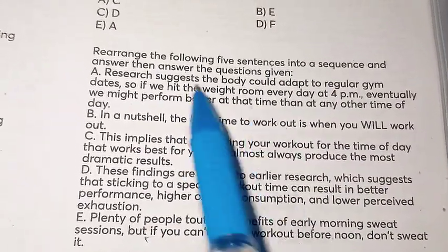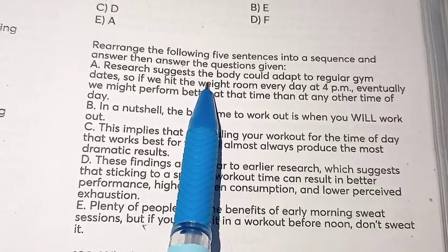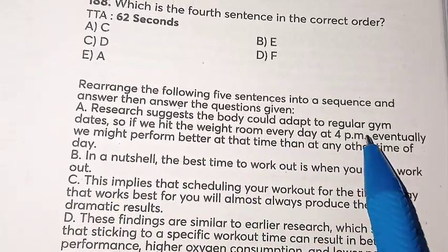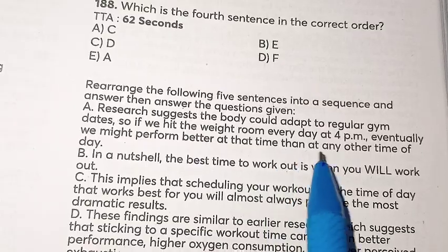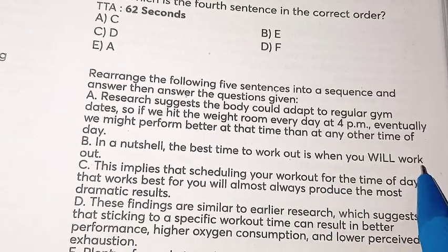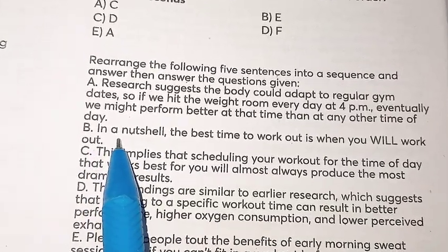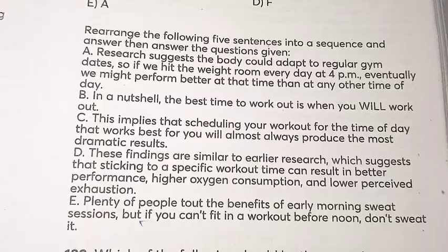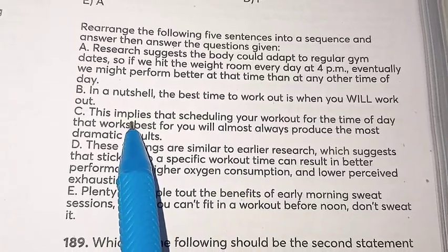So first of all, we will read that there are five sentences A, B, C, D, and E, and we have to arrange these sentences. The first rule is to read all the sentences and try to find the introductory statement. Reading the sentences: research suggests the body could adapt to regular gym dates; if we hit the weight room every day at 4 PM, eventually we might perform better at that time than any other time of day. We will reject B first because 'in a nutshell' means it is a concluding statement.